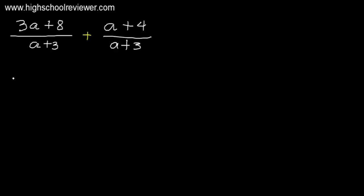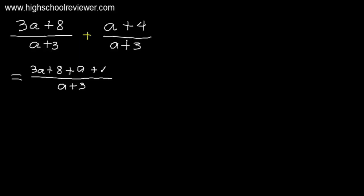Just like when you add fractions, to add similar rational algebraic expressions, we will just copy the denominator. Our denominator here is a plus 3. And then you add all the numerators. We have here 3a plus 8, and this will be added by the other numerator. We have here a plus 4. And then you combine like terms.